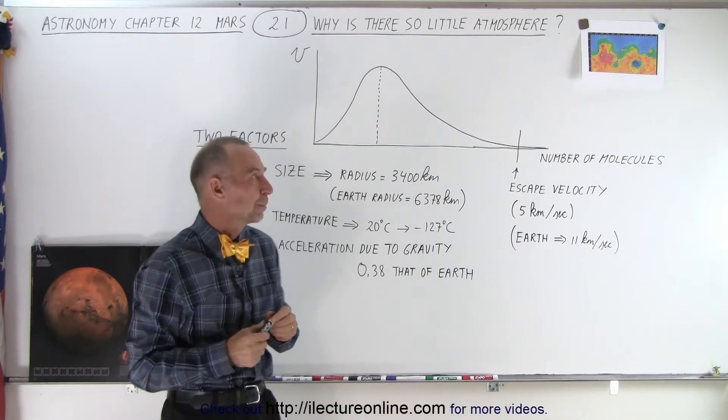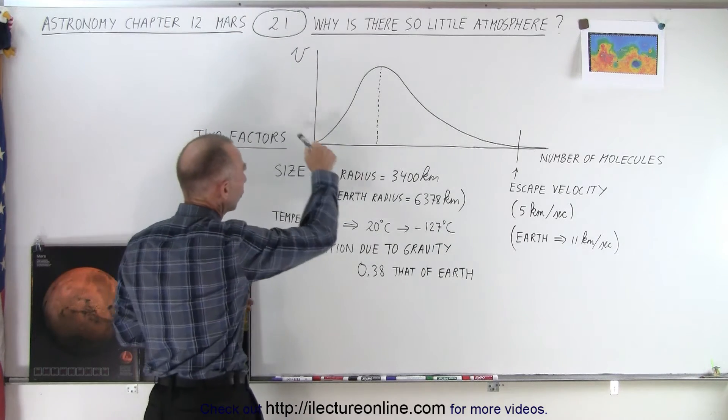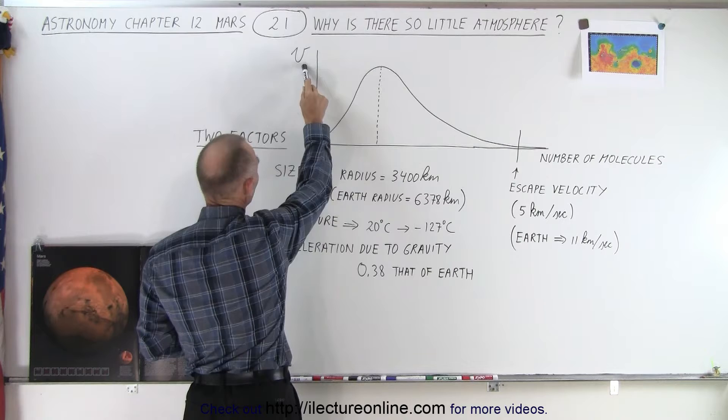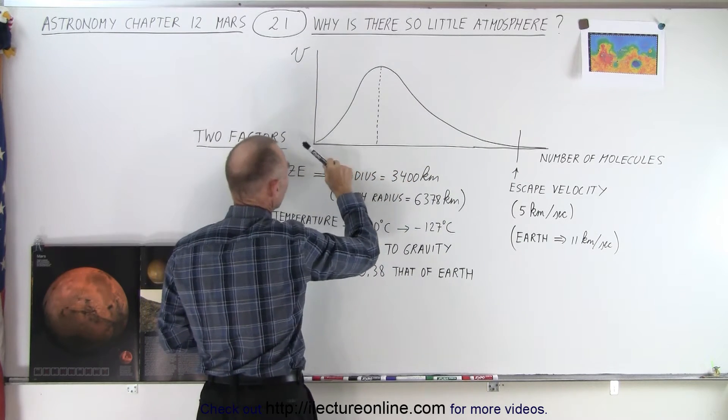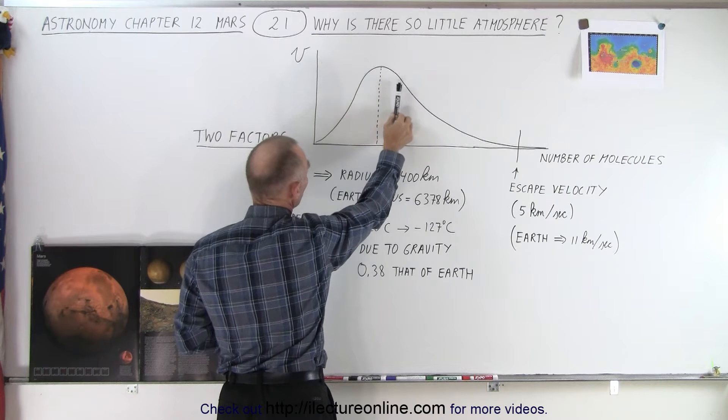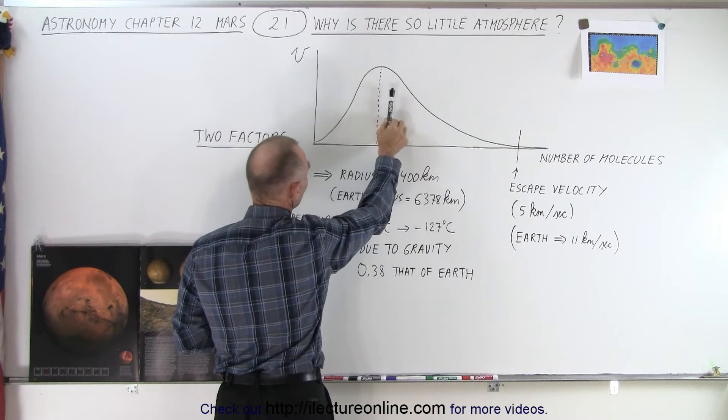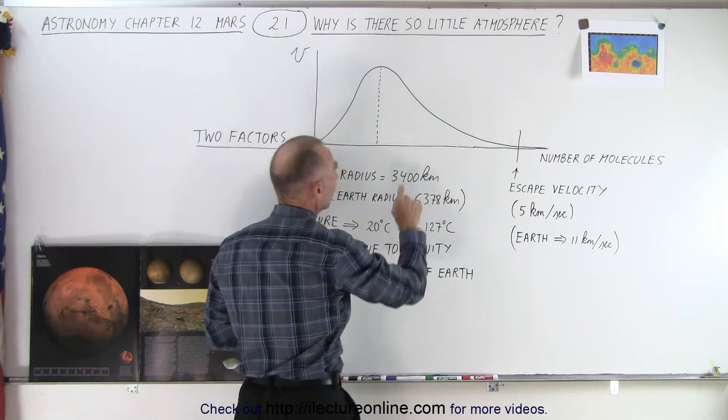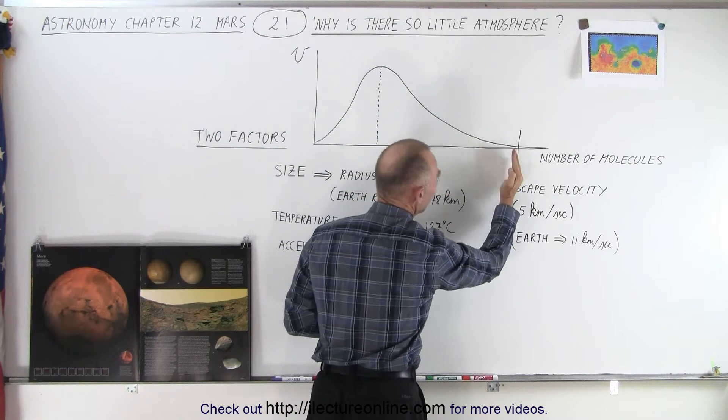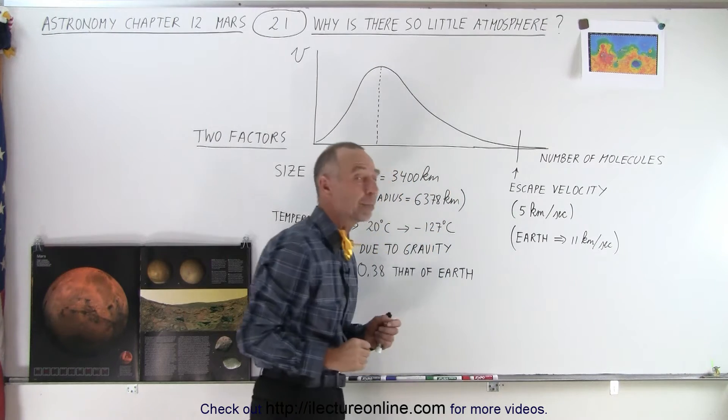Let me explain. So here what we have is a curve that shows you the velocity of the molecules and the amount of molecules at that particular velocity. So you can see that there's kind of an average right here. Most of the molecules have about this type of velocity. But some molecules travel faster than others, and a very few might travel faster than the escape velocity of the planet.